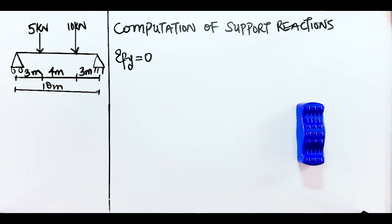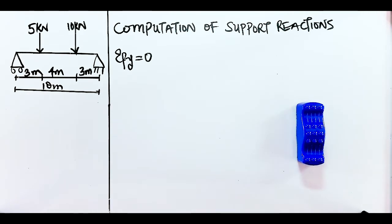Hey guys, it's Chi again. In the previous lesson we had two questions and I only solved one. I'm going to solve the next one in this lesson. We can see that the diagram has two supports similar to the previous question, but the difference is this one has two point loads of 5 kilo Newton and 10 kilo Newton.